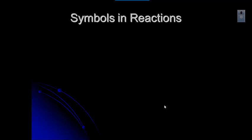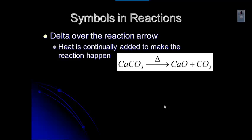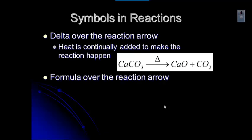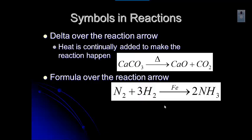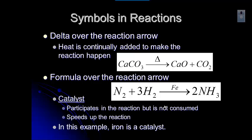There are some other symbols that aren't always in every reaction. Sometimes you'll see a Greek letter delta — a little triangle over the reaction arrow — which means we are continually adding heat to make the reaction occur, such as when heating something on a hot plate or Bunsen burner. You might also see a chemical formula over the reaction arrow; in this example, Fe (iron) is a catalyst. A catalyst participates in the reaction but is not consumed, and it speeds up the reaction.